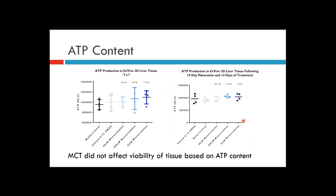Cellular ATP content was assessed as a marker of cell viability at the end of day 7 and day 14 treatments. There was no reduction in cellular ATP levels up to 2 millimolar monocrotaline, either after 7 or 14 days of treatment. Essentially, monocrotaline did not affect tissue viability based on ATP content, but did affect hepatocyte function based on albumin data — the tissue remained viable while its function was compromised.